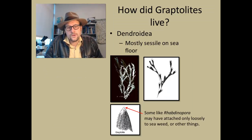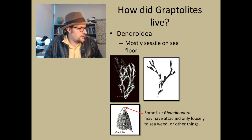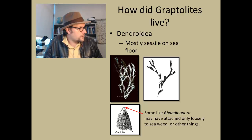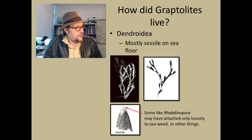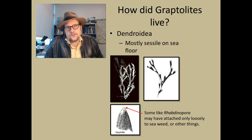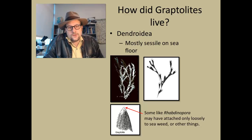So how did graptolites live? There are two different types. The Dendroids were mostly sessile, lived on the ocean floor as branching zooid organisms, making their skeletons of collagen rather than calcium carbonate — feeding in very similar ways to bryozoans but probably unrelated, likely related to the hemichordates of today. Some may have attached loosely to seaweed and actually floated upside down.